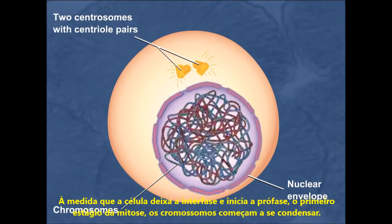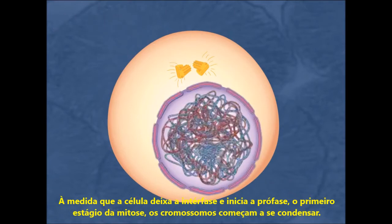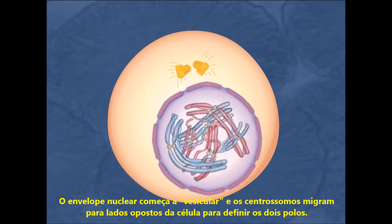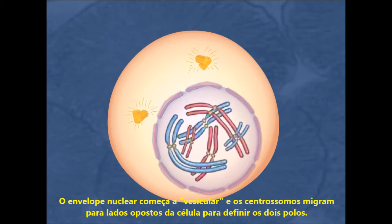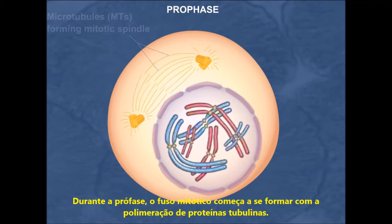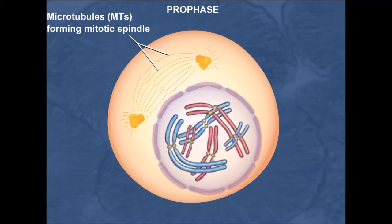As cells leave interphase and begin prophase, the first stage of mitosis, the chromosomes begin to condense. The nuclear envelope begins to vesiculate, and the centrosomes migrate to opposite ends of the cell to define the two poles. During prophase, the mitotic spindle apparatus begins to form by the polymerization of tubulin proteins, creating microtubules that emanate from each centrosome.